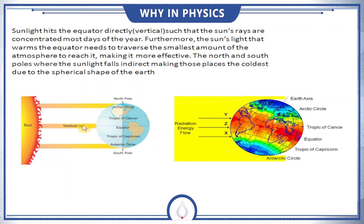Sunlight falls vertically on the equator at an angle of 90 degrees, while at the poles the sunlight doesn't fall directly — it falls indirectly. That's why the temperature at the equator is higher than the poles, and due to the spherical shape of the earth, this effect is pronounced.